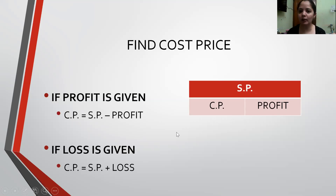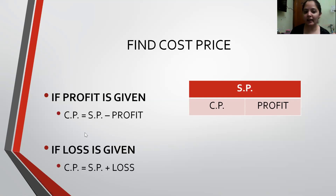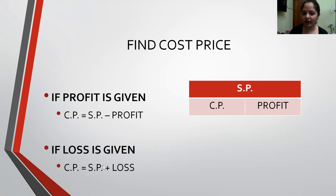If Loss is given to us, in that case, if I am having a loss on selling the goods, I am going to add the Loss to the Selling Price. Why? Because the Selling Price is less. So Selling Price plus Loss is equal to my Cost Price.